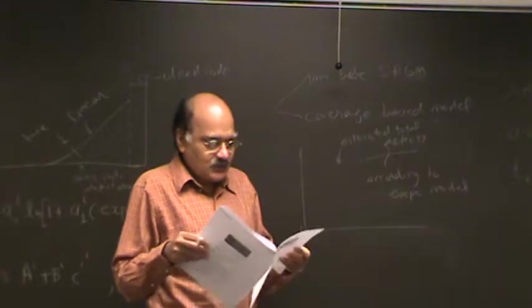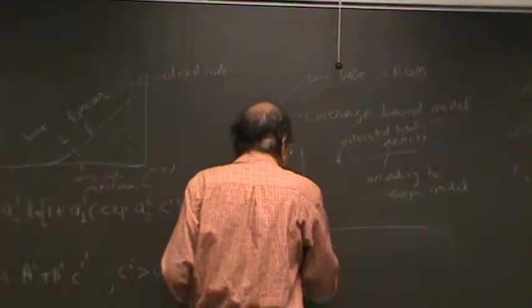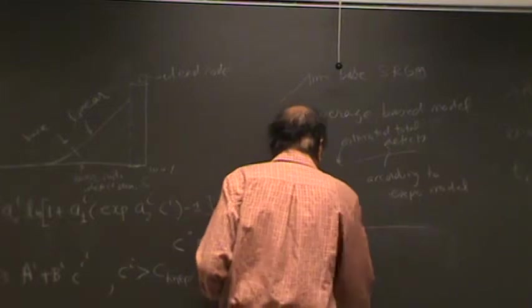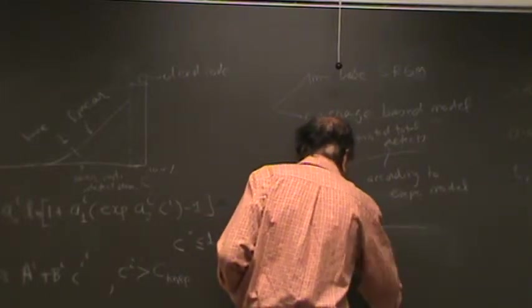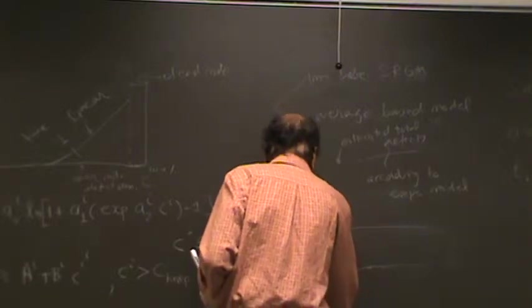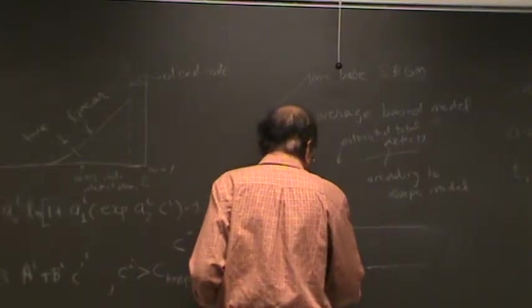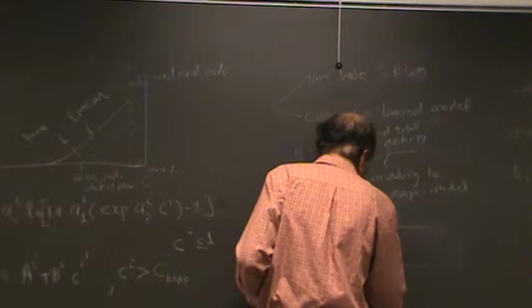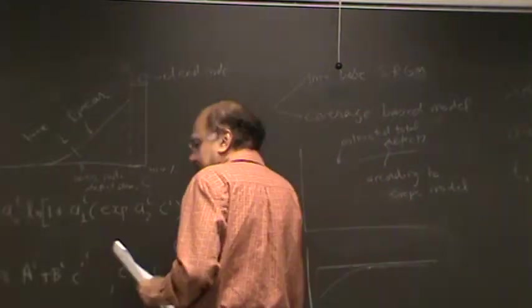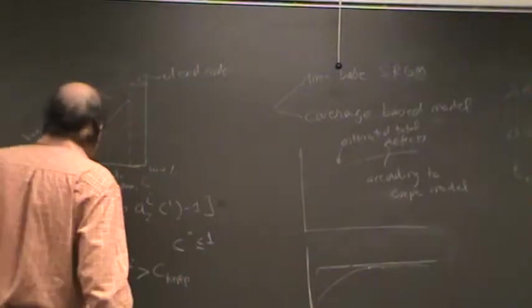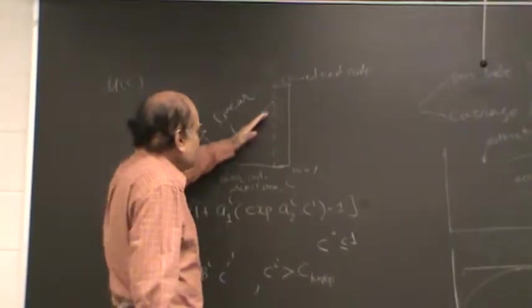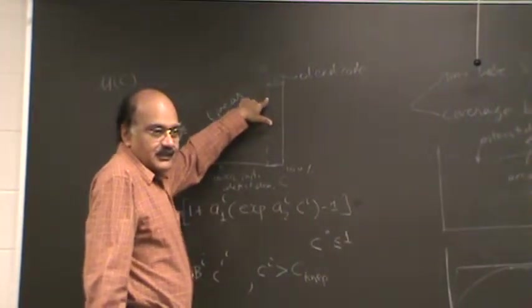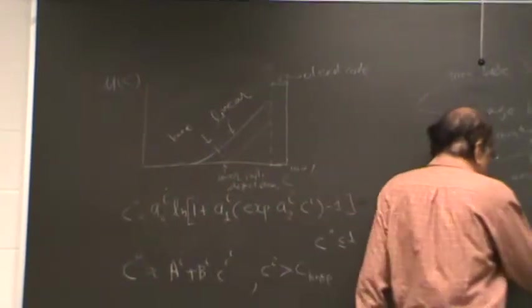However, if you will use this coverage-based model, your initial value in the beginning would not work, obviously, but after a while, the value it will predict would be quite constant. So once you have gotten into the linear region, you can see that it projects this is the number of defects you are going to find. And your prediction is going to remain very constant. So this is using coverage-based model.